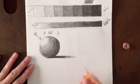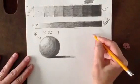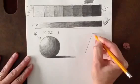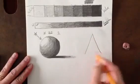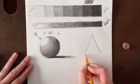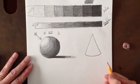The next form is the cone. To draw the cone, we're going to start basically with the top of a triangle, except instead of going straight across at the bottom, we're going to do a curved line, and that's going to be the cone.